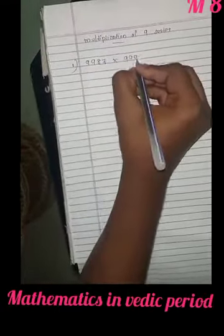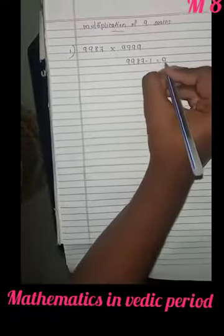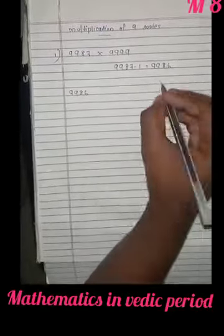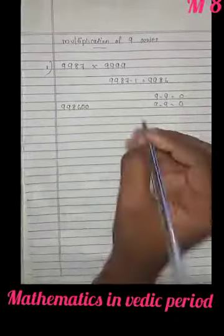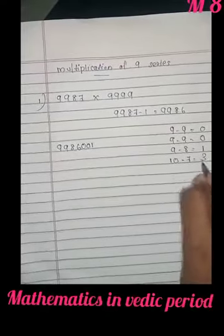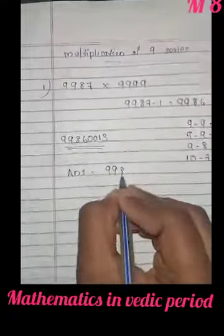Question number 1: 9987 into 9999. First you write 9986. Then 9 minus 9 is 0, 9 minus 9 is 0, then 9 minus 8 is 1, then 10 minus 7 is 3. The answer becomes 99860013. Next question.